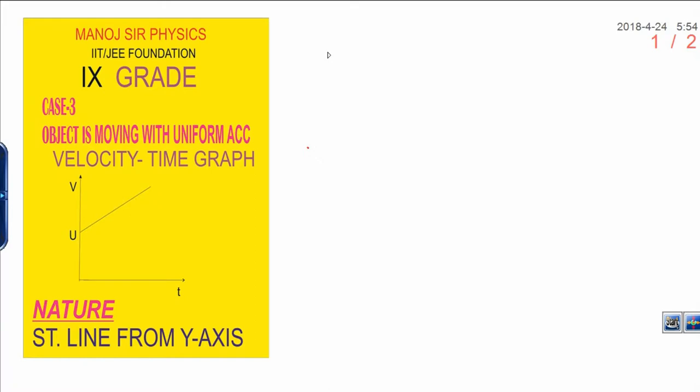Dear students, in my previous lecture you had seen case number two in which an object is moving with uniform speed. You had drawn three types of graphs: position-time graph, velocity-time graph, and acceleration-time graph. For your standard, I want to discuss here only velocity-time graph. In case three, object is moving with uniform acceleration.